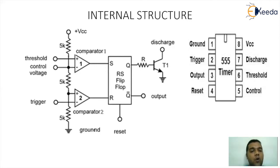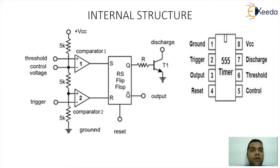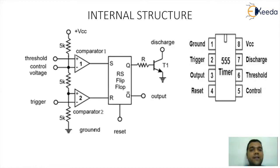For the lower comparator, the control voltage corresponds to 1/3 VCC. Observing the connections carefully — for the lower comparator, the reference potential is given to the plus pin, so the trigger is compared with respect to the plus pin. For the upper comparator, the minus pin is connected to 2/3 VCC, so whatever happens at the threshold pin decides the output of the upper comparator. Whenever the plus pin of the upper comparator crosses 2/3 VCC, the upper comparator gives output 1, making S equal to 1.